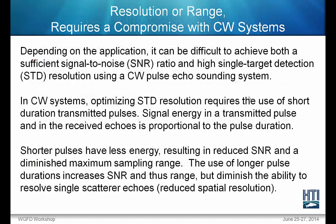Depending on the application, it can be difficult to achieve both a sufficient signal-to-noise ratio and high signal target detection resolution using a CW pulse echo sounding system. In CW systems, optimizing single target detection resolution requires the use of short duration transmitted pulses. Signal energy in a transmitted pulse and in the received echoes is proportional to the pulse duration. Shorter pulses have less energy, resulting in reduced signal-to-noise ratio and diminished maximum sampling range. Longer pulse duration increases signal-to-noise ratio and range, but diminishes the ability to resolve single scatterer echoes, which reduces spatial resolution.